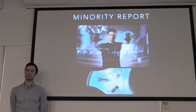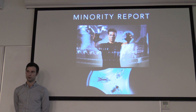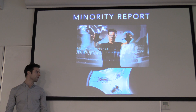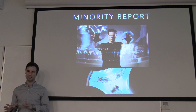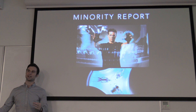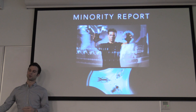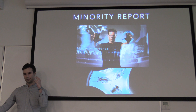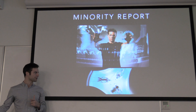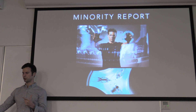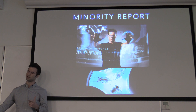In the movie Minority Report, Tom Cruise plays a cop from the future who, through the use of three psychics, predicts a crime before it happens. I was thinking about the movie and I said this is completely unrealistic — there's no way you can predict a crime before it happens. But I just completed a three-month data science immersive, and I realized Tom Cruise is not only a cop, he's a data scientist, and those three psychics are actually machine learning algorithms.